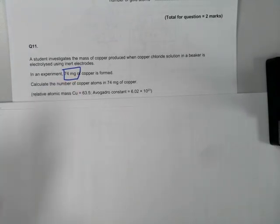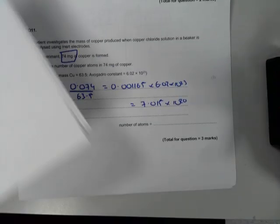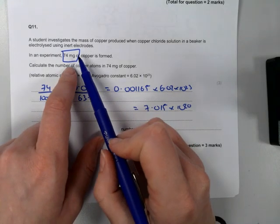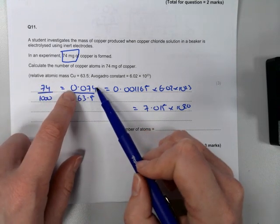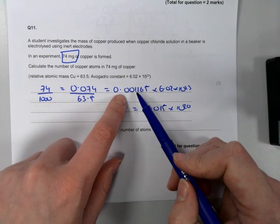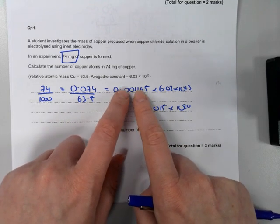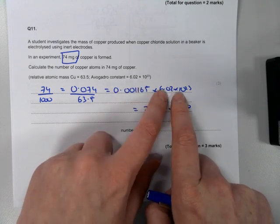Similar question — pay attention to the fact that you've got milligrams as your mass. You're going to need to convert that to grams before going any further: 74 divided by 1,000. Once in grams, divide by formula mass (63.5 for copper) to get moles. Then do moles multiplied by Avogadro's constant to work out the number of atoms.